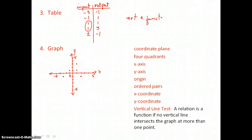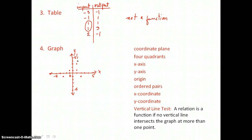We can also see this in our graph using a vertical line test. A vertical line test says a relation is a function if no vertical line intersects the graph at more than one point. When we pass a vertical line through this graph, it intersects the relation in two points at once — confirming it's not a function.